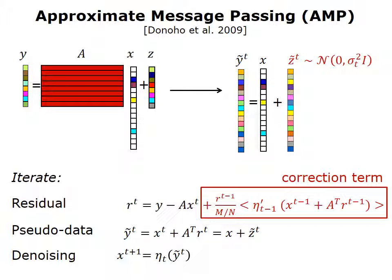AMP iterates over three steps. Step one: it calculates the residual r, which is primarily the unexplained portion of the measurements, and it also contains a correction term — note that xt is the estimate of the input x in iteration number t. In step two, AMP calculates the pseudodata y-tilde, which is statistically equivalent to the input x plus additive white Gaussian noise. This naturally leads to step three, where we denoise the pseudodata by applying the denoiser eta_t, resulting in x_{t+1}, the estimate for the next iteration. The denoiser eta_t is in fact our universal denoiser.